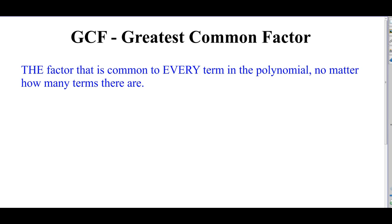We always do GCF first. A lot of times you'll get a polynomial, like a binomial, that doesn't look like it's factorable as a difference of squares. But once you take out the greatest common factor, then you find out — oh, what's remaining? That binomial is factorable. It is a difference of squares. So here we go.